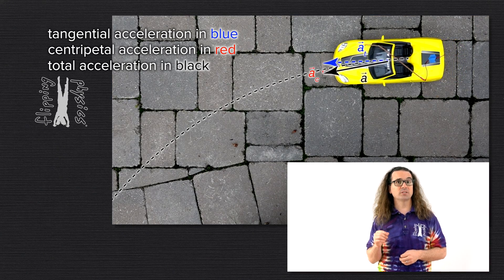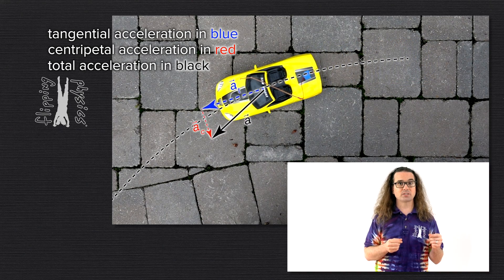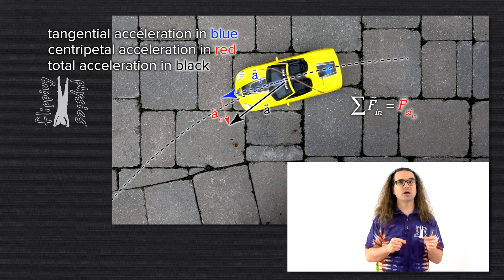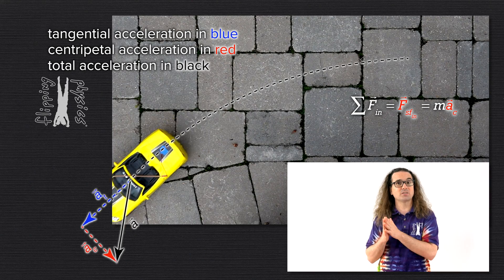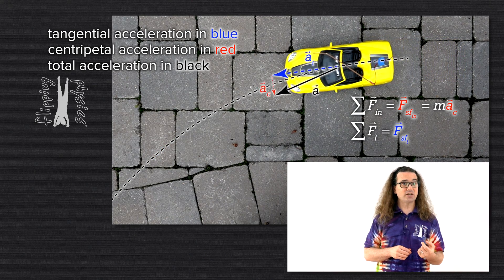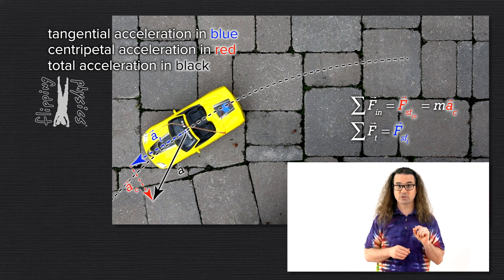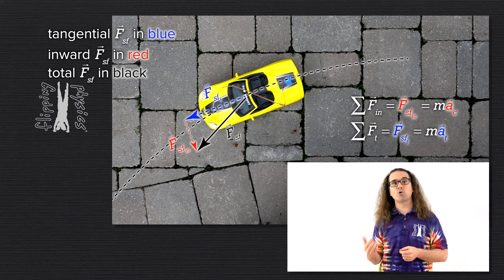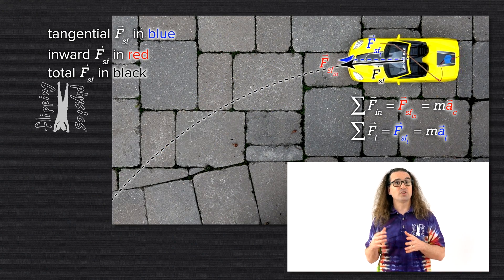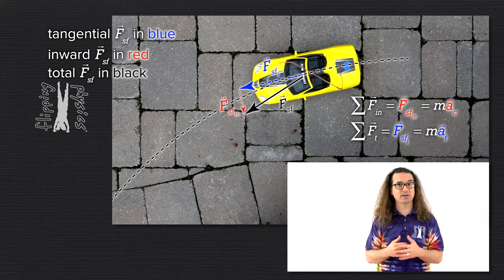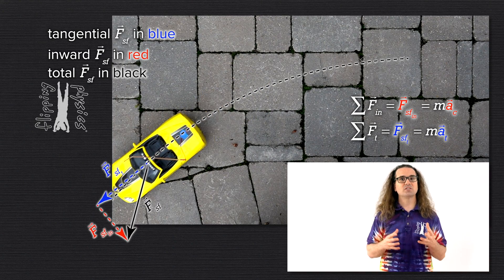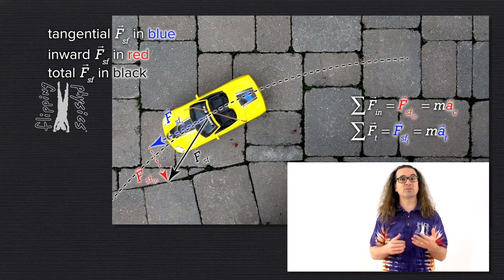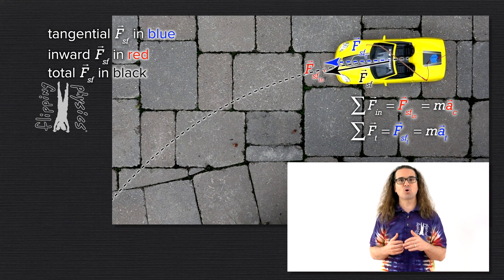Therefore, according to Newton's second law, the forces causing the tangential and centripetal accelerations are the components of the force of static friction. The net force in the inward direction equals the component of the force of static friction in the inward direction, which equals mass times centripetal acceleration. And the net force in the tangential direction equals the component of the force of static friction in the tangential direction, which equals mass times tangential acceleration. The components of the force of static friction add up to the total force of static friction, which starts tangent to the circle where tangential speed and centripetal acceleration are both zero, then increases in magnitude and rotates direction to act more and more inward.